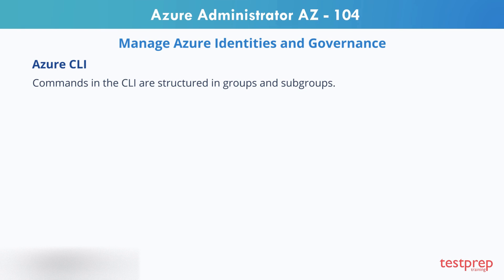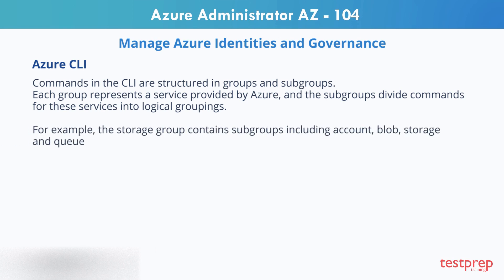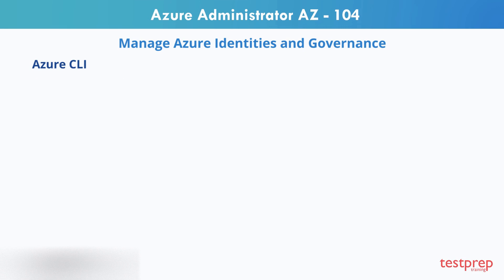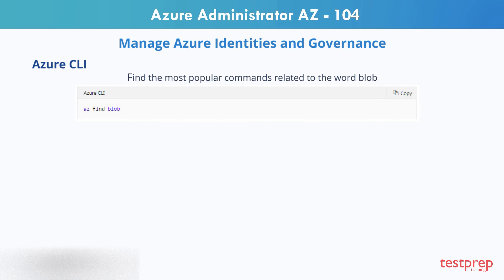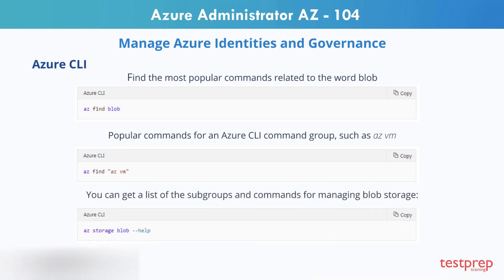Commands in the CLI are structured in groups and subgroups. Each group represents a service provided by Azure, and the subgroups divide commands for these services into logical groupings. For example, the storage group contains subgroups including account, blob, storage, and queue. To find particular commands you need, one way is to use az find — for example, to find the most popular commands related to the word blob, or to show the most popular commands for a CLI command group such as az vm. If you already know the name of the command you want, the help argument will get you more detailed information on the command and, for a command group, a list of available subcommands. For example, here's how you can get a list of the subgroups and commands for managing blob storage.